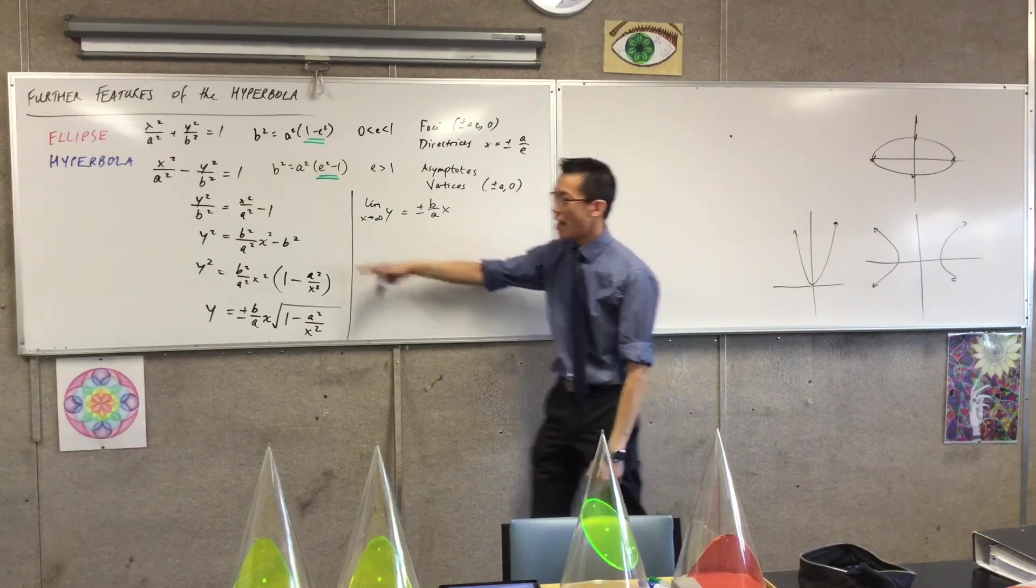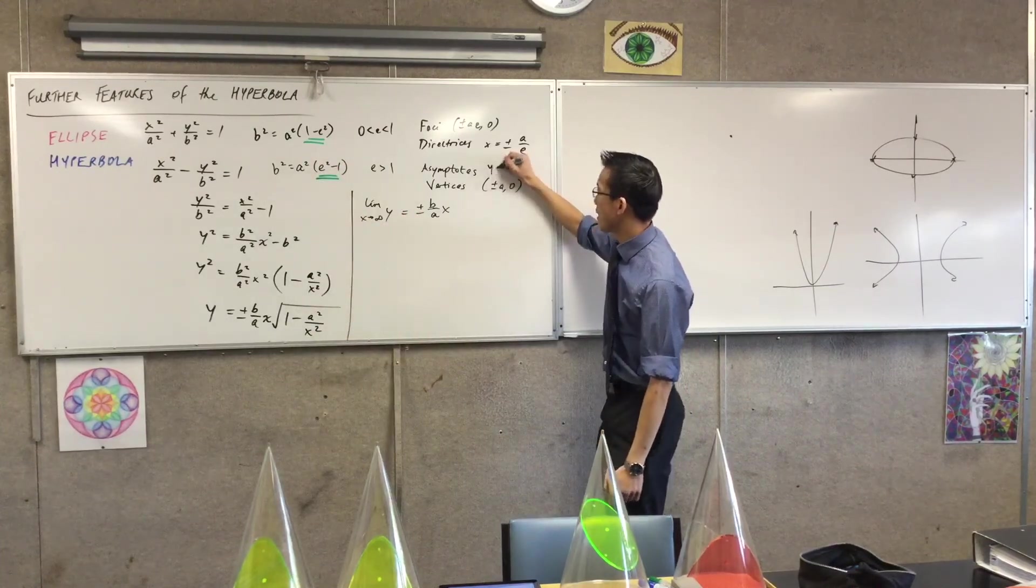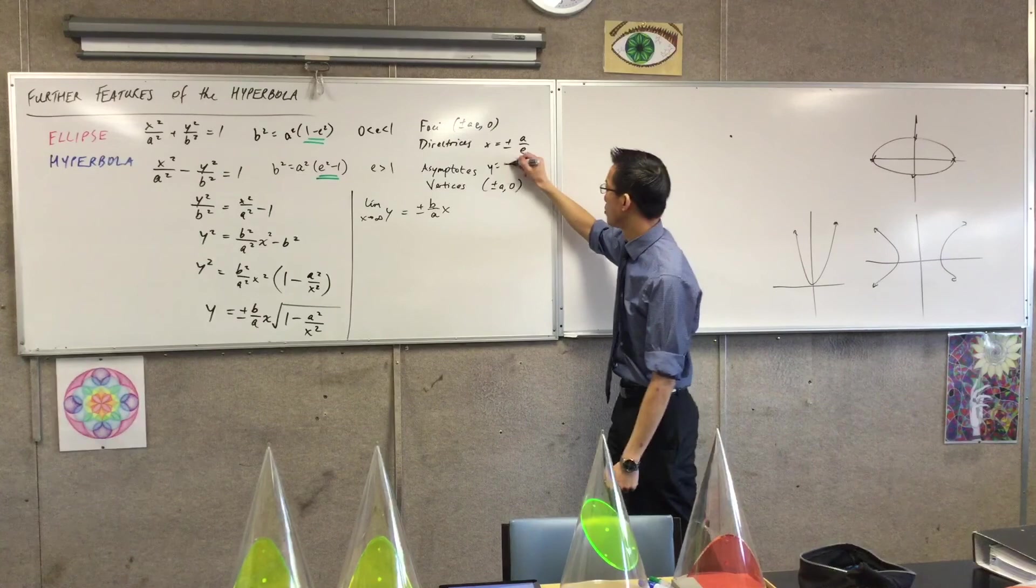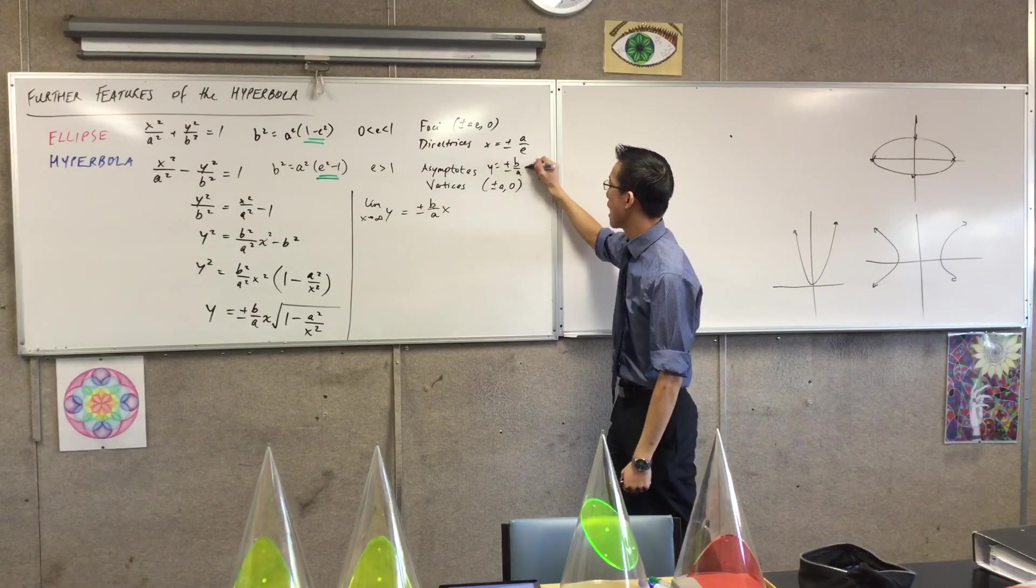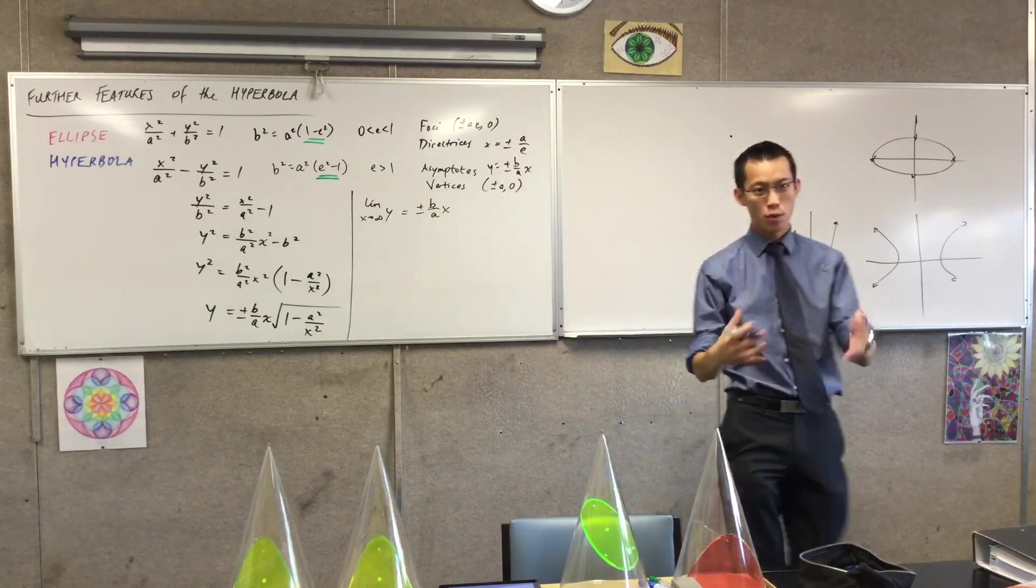In the example we looked at before, b on a was root three, okay? So they're those, they're the asymptotes, right? So I can actually just say look, I can go straight to this now. I don't need to rehearse this process every single time. I can just go ahead and have to take y is going to be equal to plus or minus b on a times x. That's how the proportions give the asymptote.